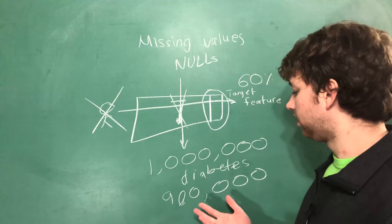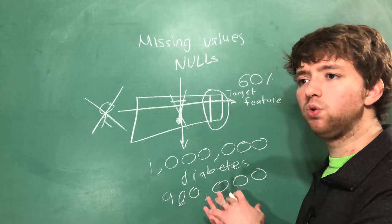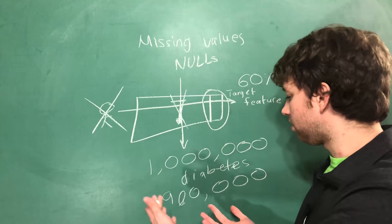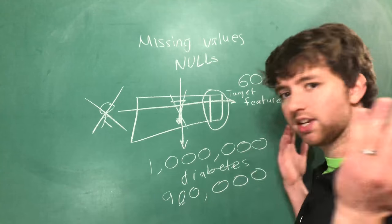Well, that means all of their descriptive features about them, we can't correlate that to whether they had diabetes or not. So their actual data is useless to us. So we just get rid of them.